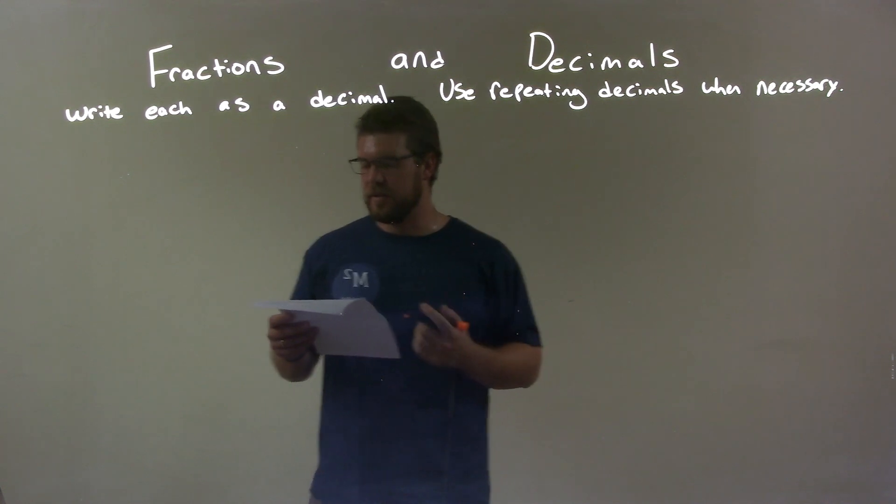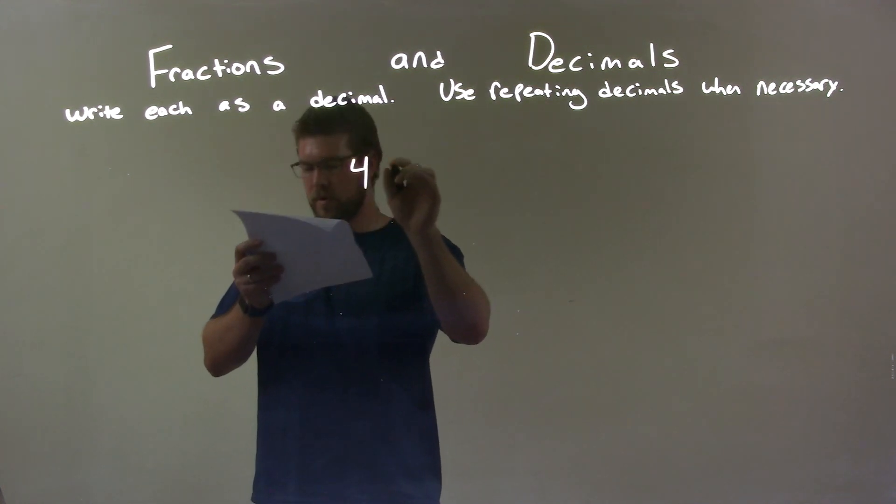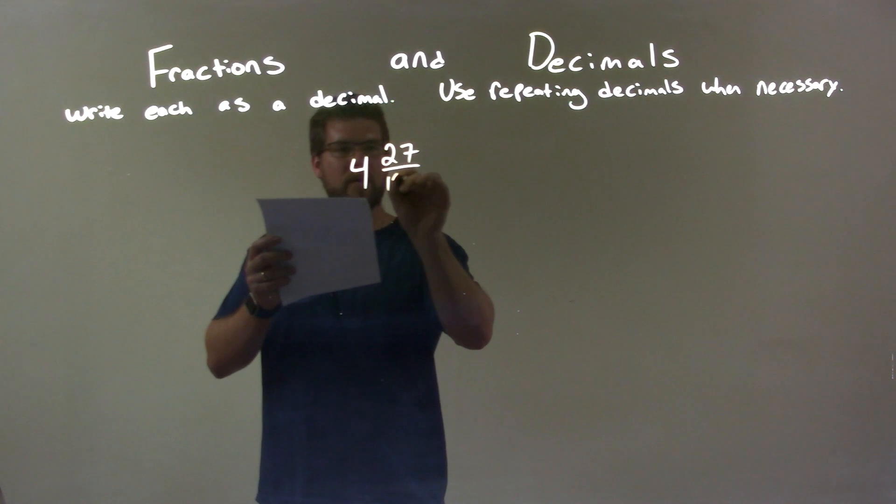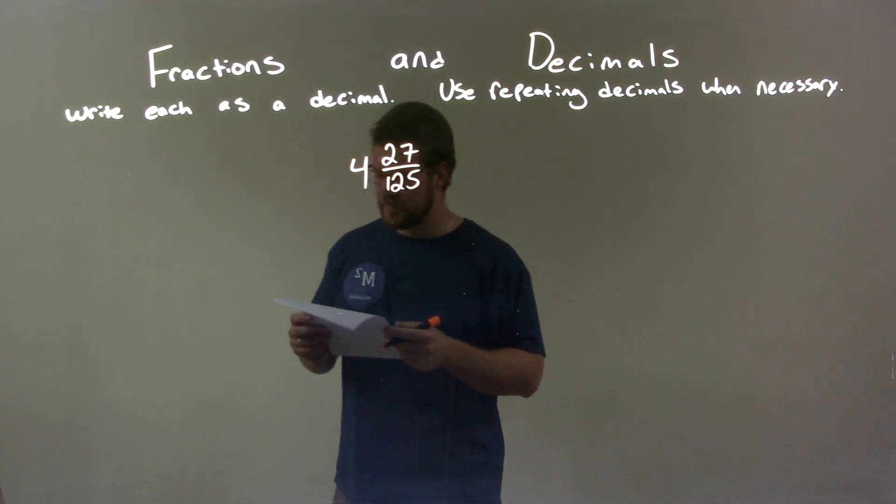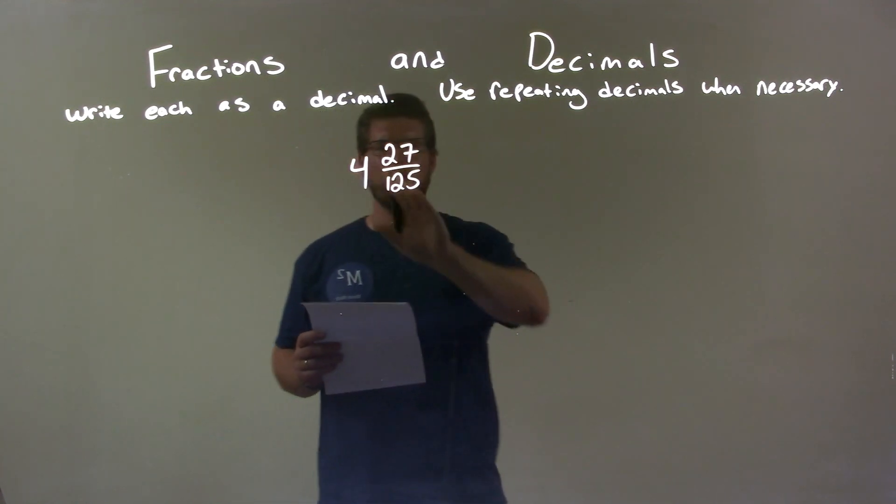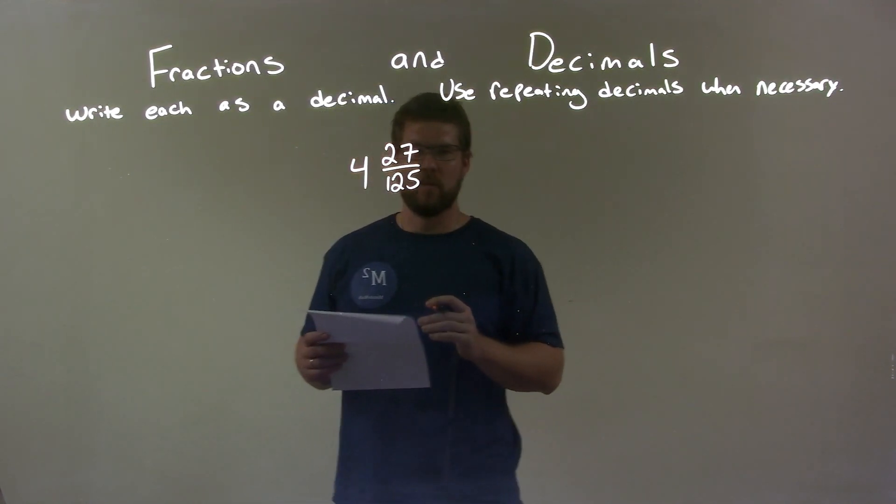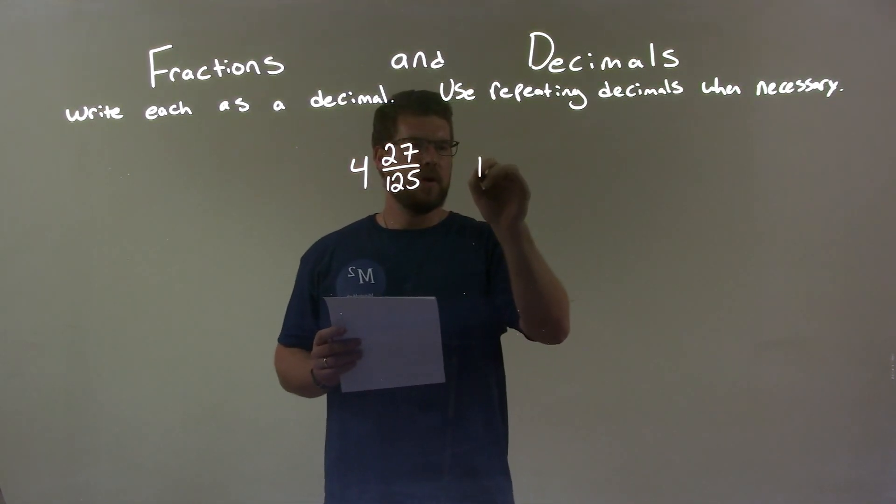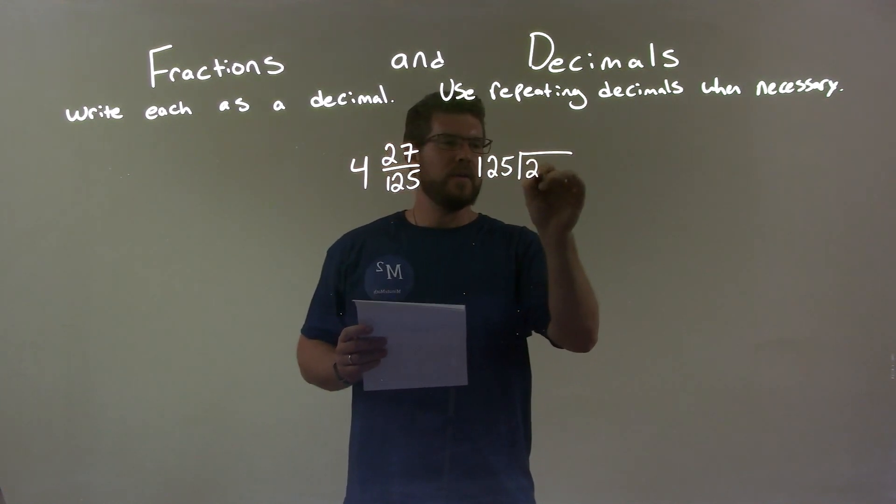If I was given this fraction, 4 and 27 over 125, I'm going to keep the 4, and I'm just going to deal with the fraction part, 27 over 125. So, we write that with long division, 125 goes into 27.